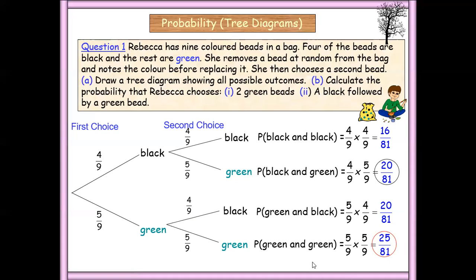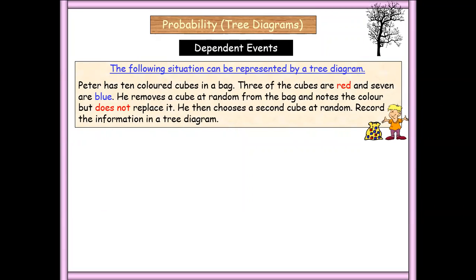Now let's look at a situation where a cube is drawn from the bag and it is not replaced. Peter has 10 color cubes in a bag. Three of the cubes are red, seven of them are blue. He removes a cube at random from the bag, notes the color, but he doesn't replace it. So he takes out the cube, looks at the color, but does not put it back into the bag.